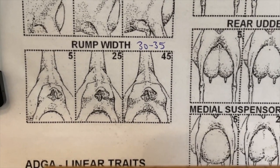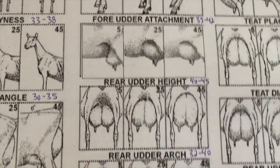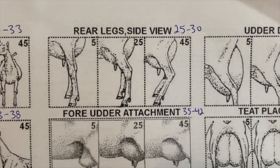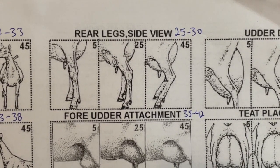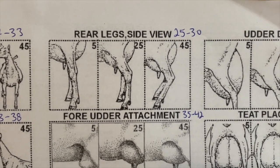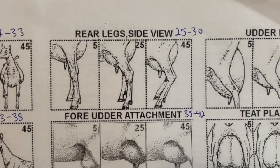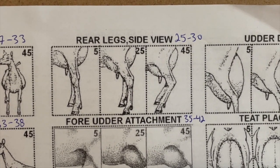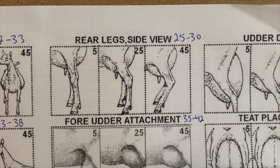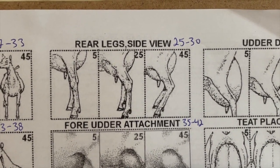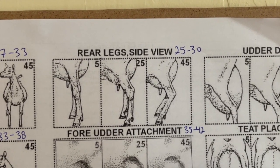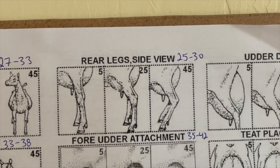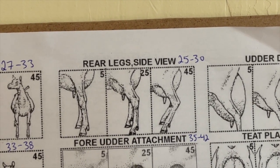In rear leg side view, a score of 5 is what we call 'posty' — legs practically straight up and down with not a lot of range of motion. At 25 points there's a nice curve in the back of the leg, then it's relatively straight from the hock down to the pastern — basically from knee to ankle. At 45 they're so curved the doe looks almost like she's squatting. We're looking for about 25 to 30 points — that 25-point doe has a really nice leg shape.